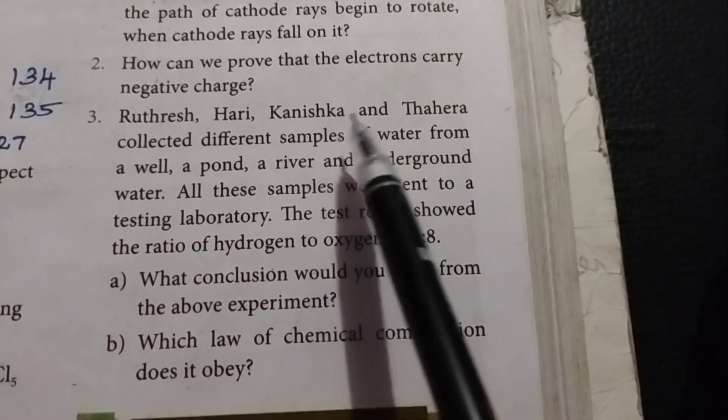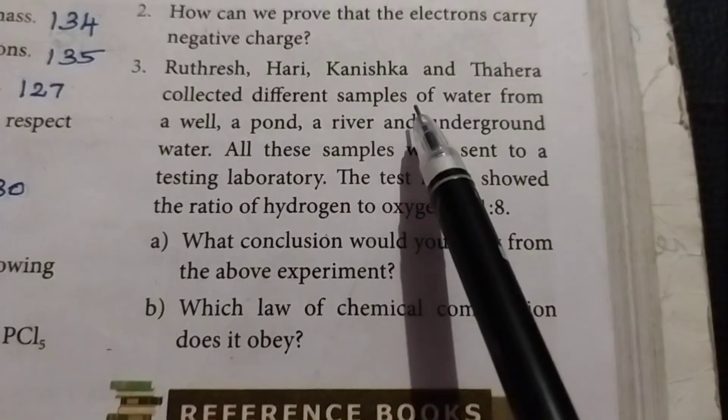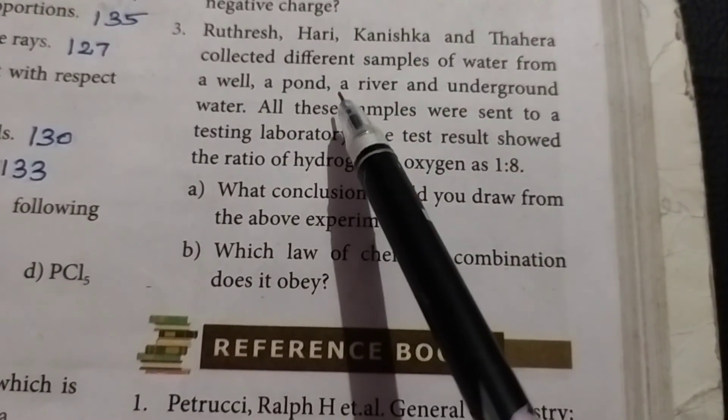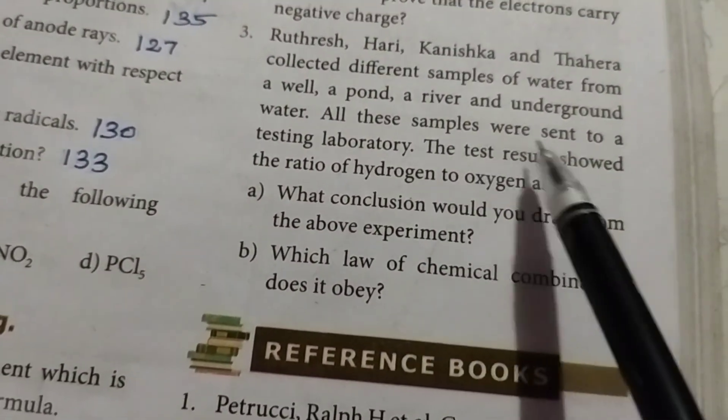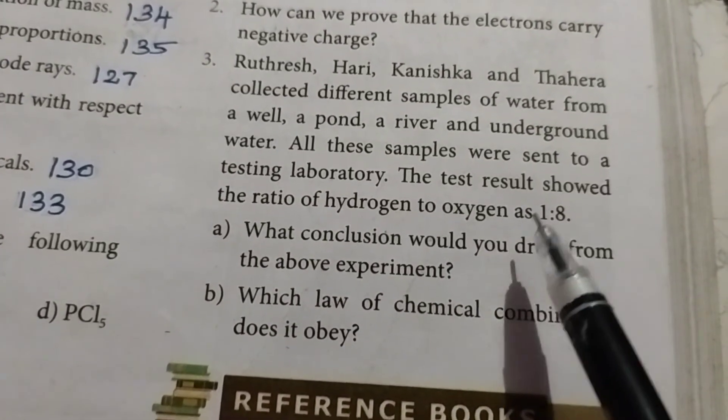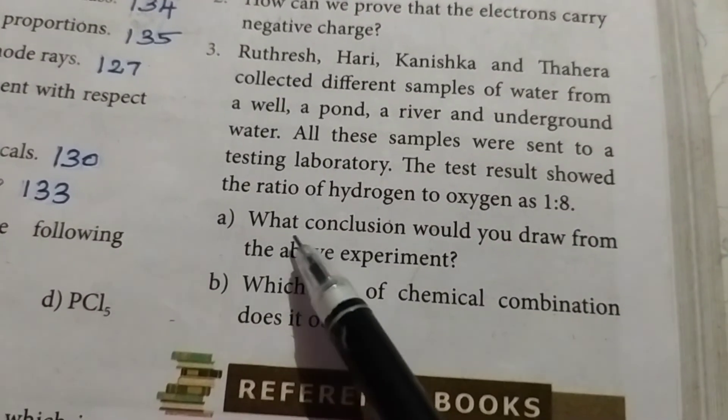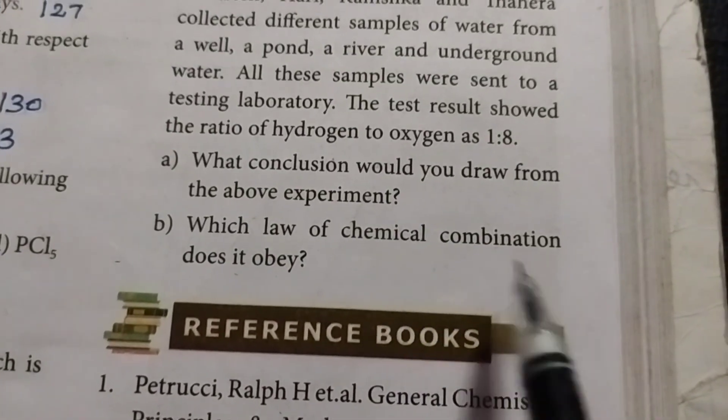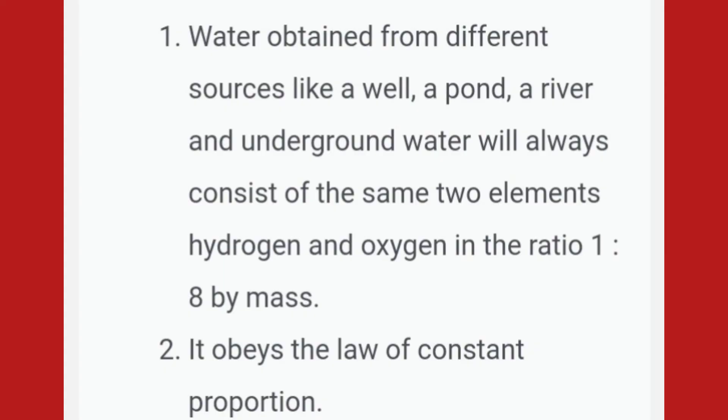Third question: Ruthresh, Hari, Kanishka, and Tahira collected different samples of water from a well, a pond, a river, and underground water. All samples were sent to a testing laboratory. The test results showed the ratio of hydrogen to oxygen as 1 to 8. Option A: what conclusion would you draw from the above experiment? Option B: which law of chemical combination does it obey? Answer 1: water obtained from different sources will always consist of the same two elements, hydrogen and oxygen, in the ratio of 1 to 8 by mass. Second one: it obeys the law of constant proportion.